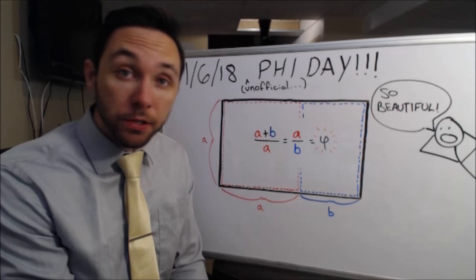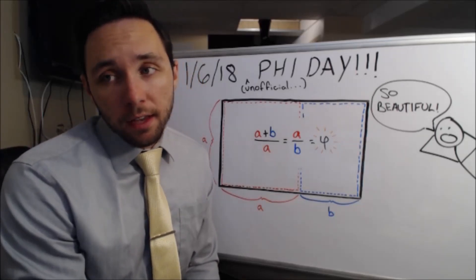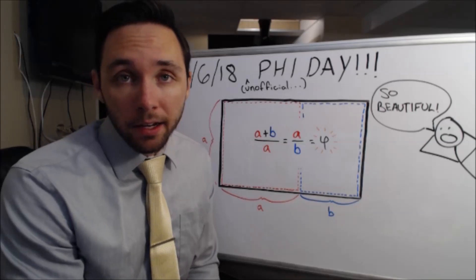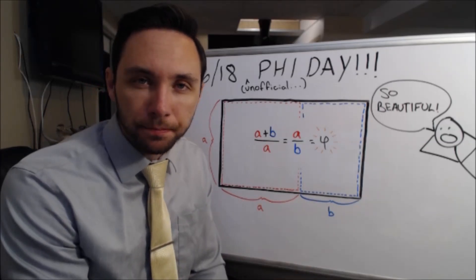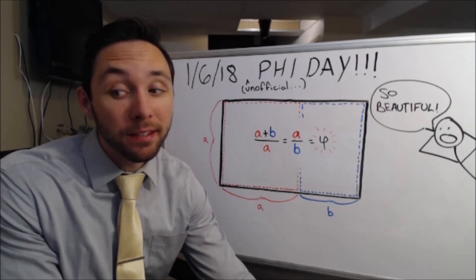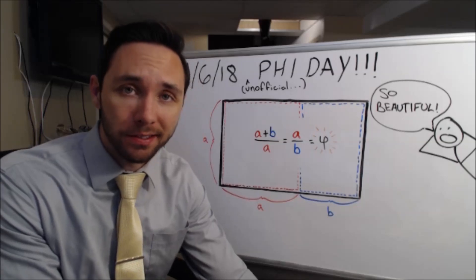Largest prime number as of this month, just a few days ago, is now 2 to the power of 77,232,917, but then minus 1 at the end. However, that's actually not the point of this video. The point of this video actually has to do with today's date, if you use the inferior month, day, year calendar system.